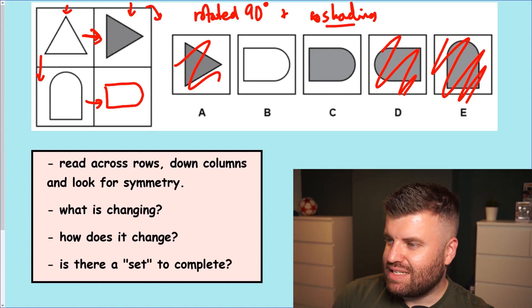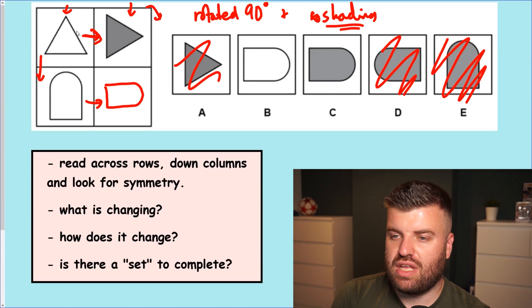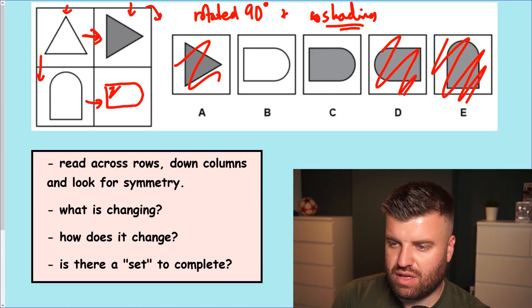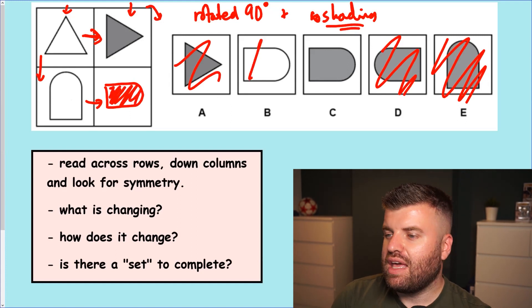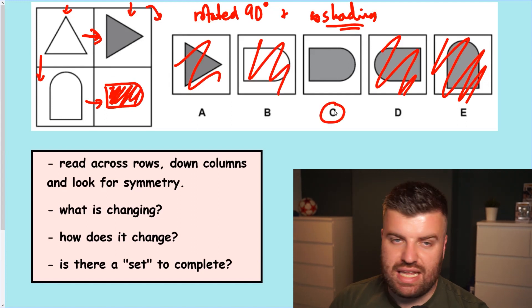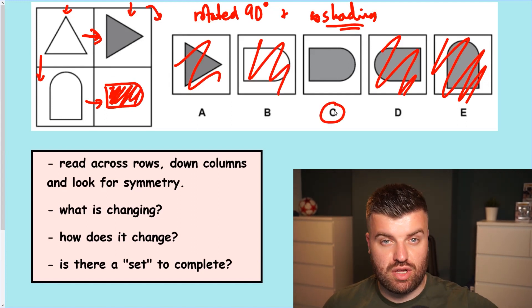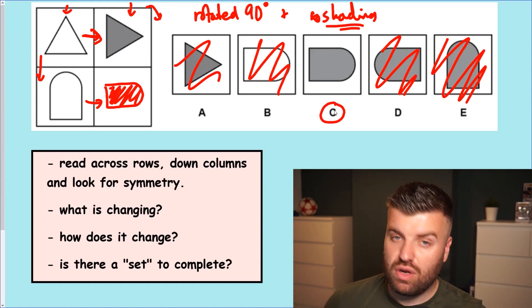Let's see now the second thing we spotted was the shading changed. It went from white to grey. So our shape's going to go from white to grey. It can't be B. The answer is C. So the first type of grid questions are those where we're looking for transformations across rows or down columns.